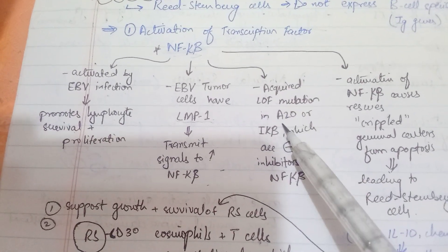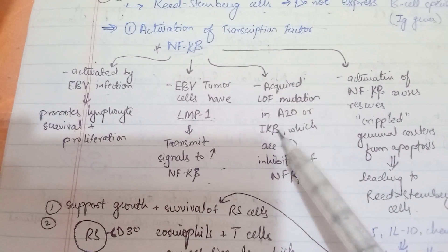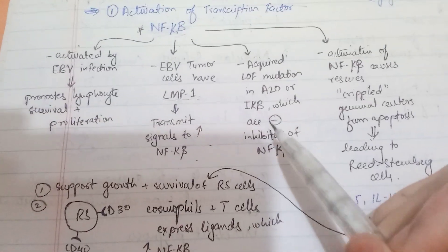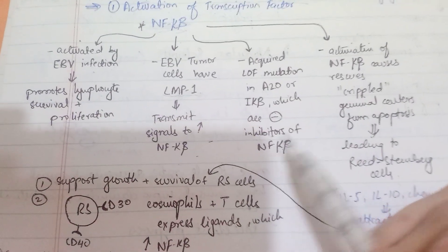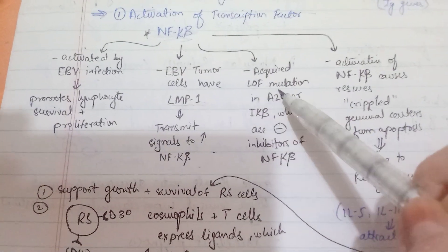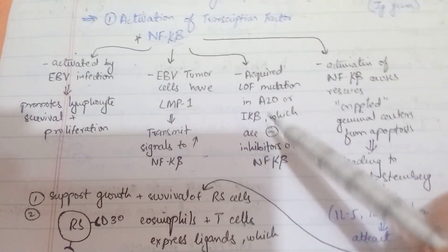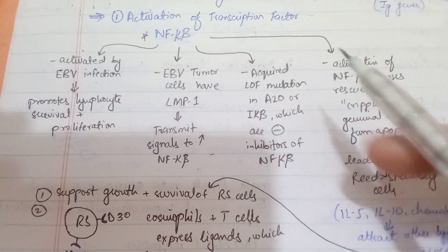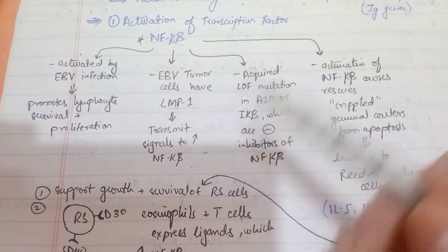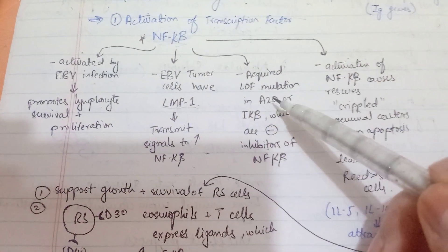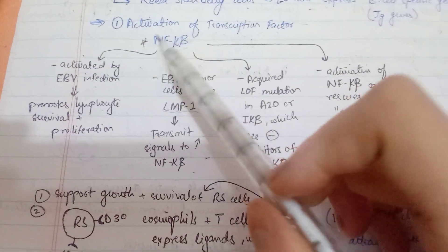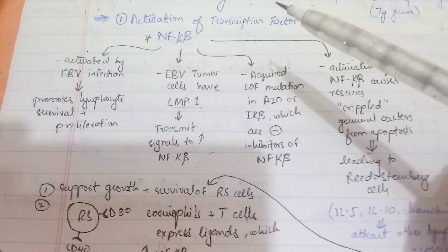A third mechanism involves A20 and IKB, which are inhibitors of NF-κB. If loss-of-function mutations occur in these inhibitors, they can no longer perform their function, which also causes an increase in NF-κB activation. So there are three mechanisms leading to NF-κB activation.